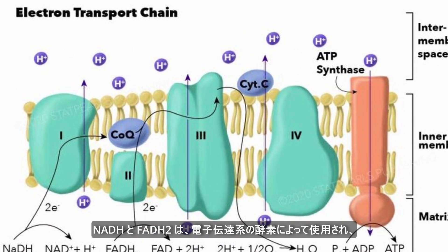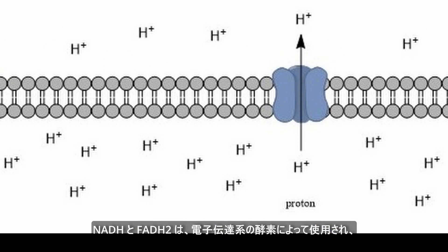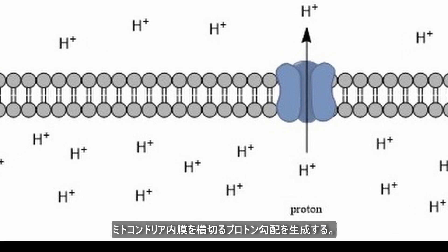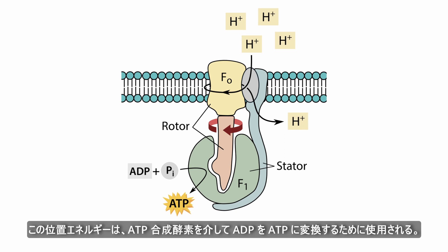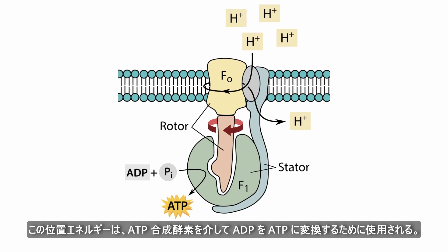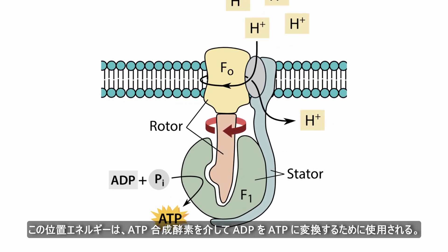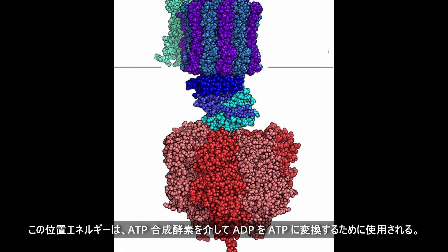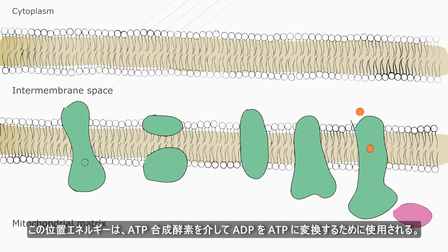NADH and FADH2 are then used by enzymes in the electron transport chain to generate a proton gradient across the inner mitochondrial membrane. This potential energy is harnessed when protons are allowed to cross back down through the proton gradient via ATP synthase, which in turn harnesses this energy to convert ADP into ATP.